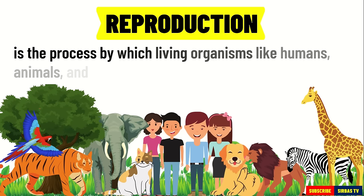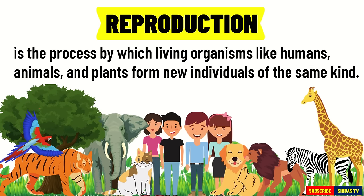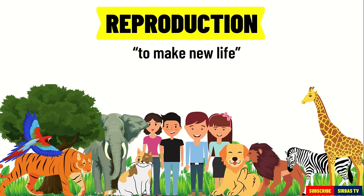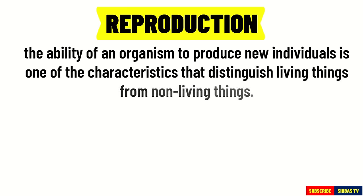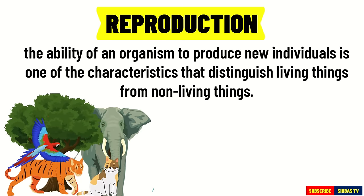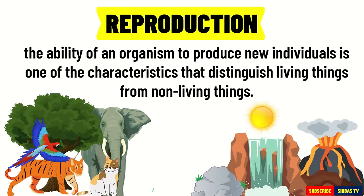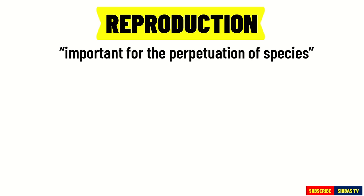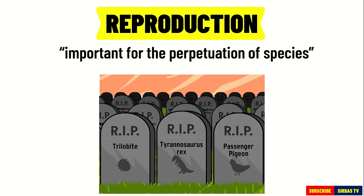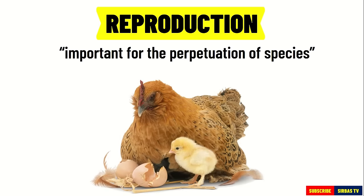Reproduction is the process by which living organisms, like humans, animals, and plants, form new individuals of the same kind. To reproduce means to make a new life. The ability of an organism to produce new individuals is one of the characteristics that distinguish living things from non-living things. Reproduction is important for the perpetuation of species. If there is no means of reproduction, individuals of a species would not exist anymore and the species would die. Through reproduction, new organisms are produced and the species live on.